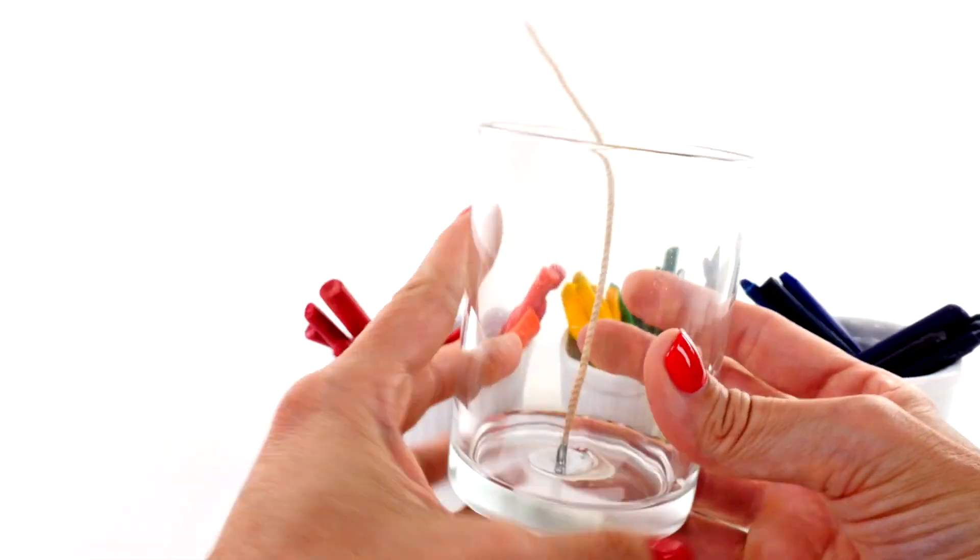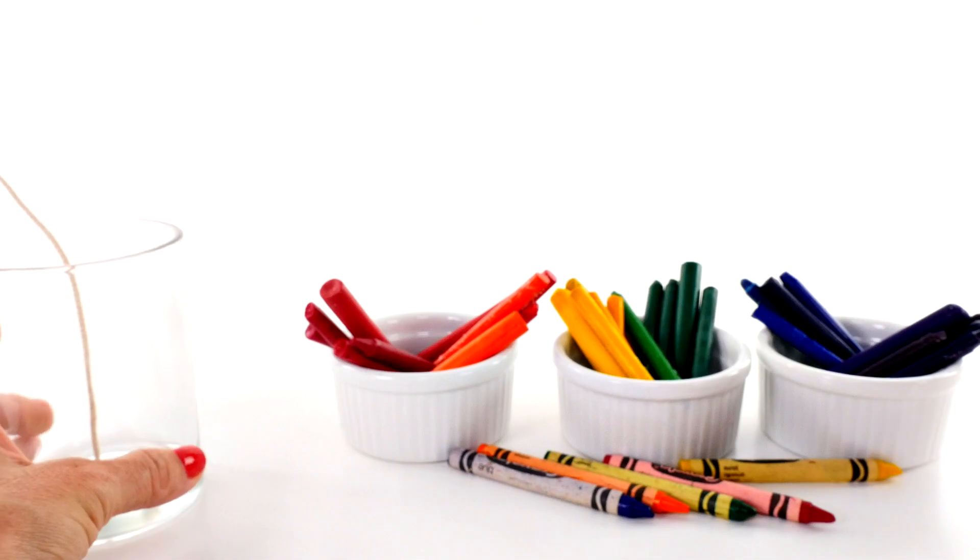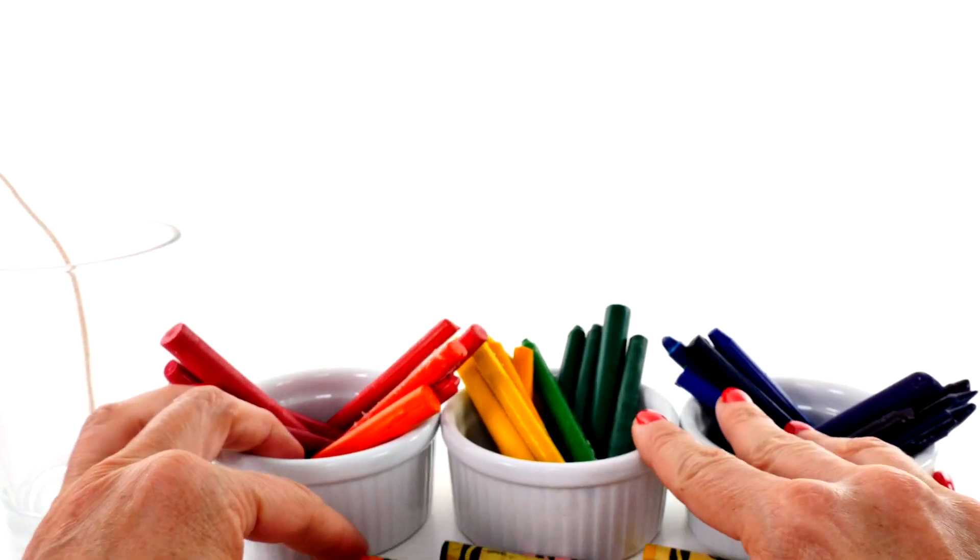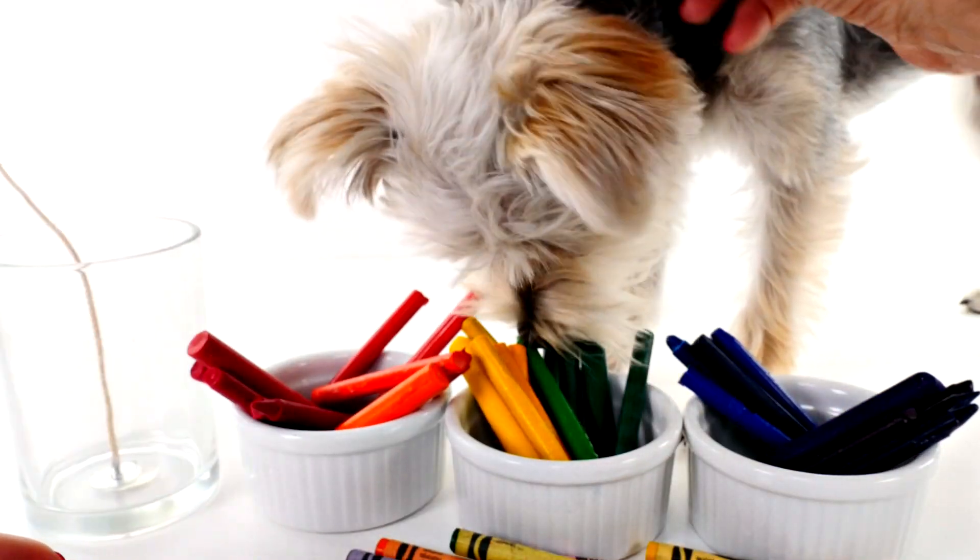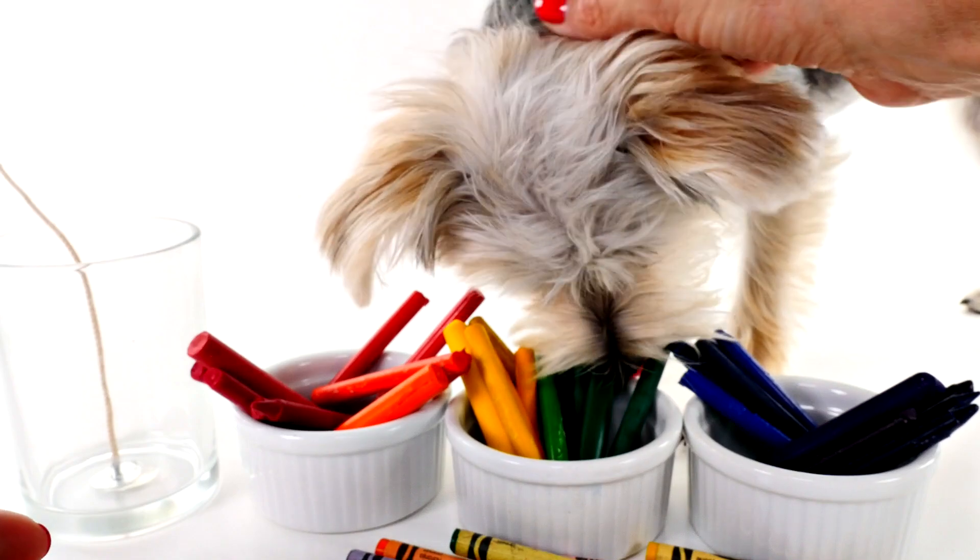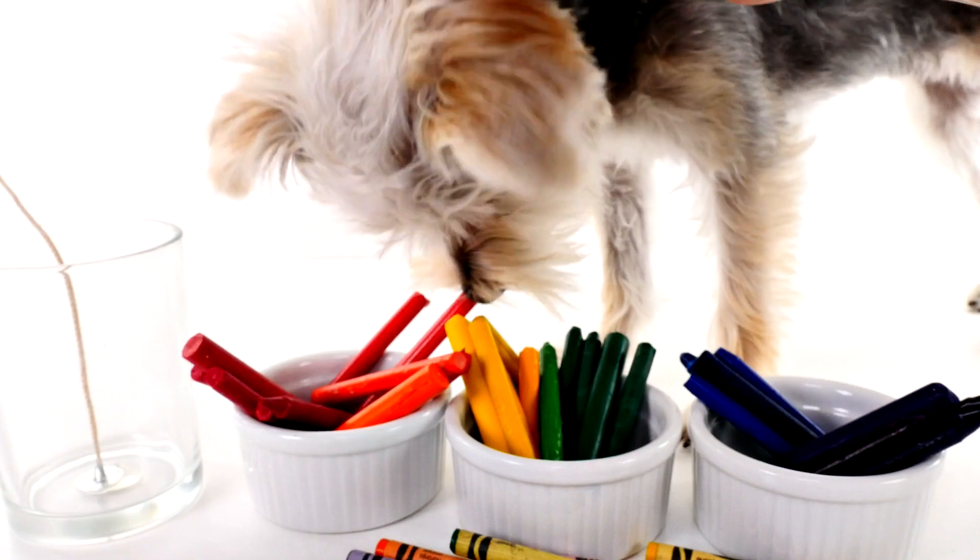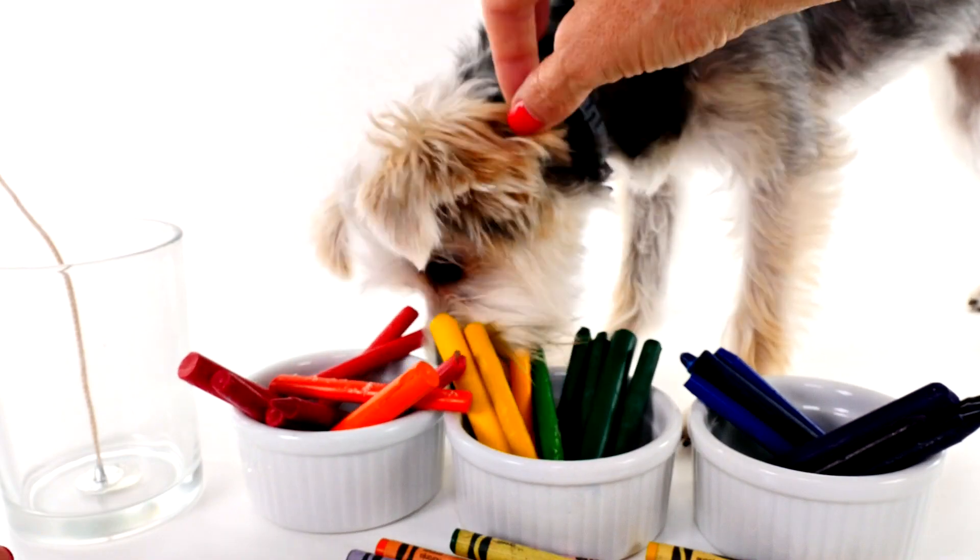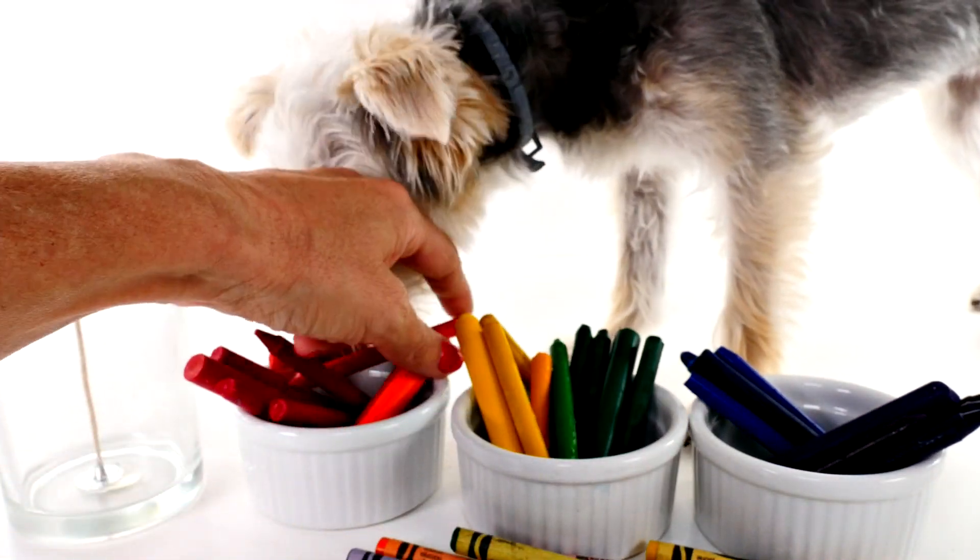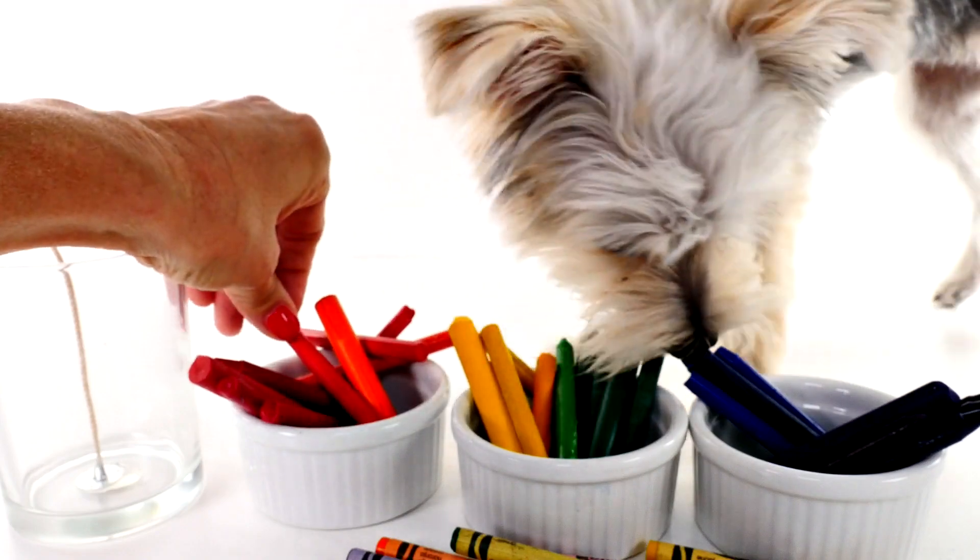We're going to use this and then some old crayons that I had. If you hear some noise in the background it's Zoomy. Zoomy has a little toy and she's next to me playing while I record. What are you doing, girl? You can't have crayons, no no.